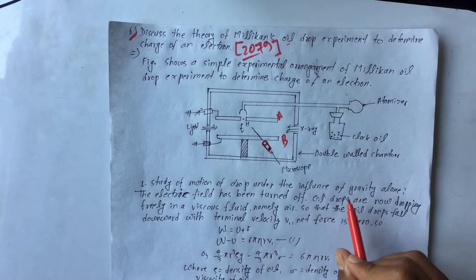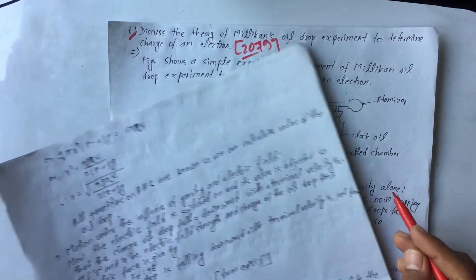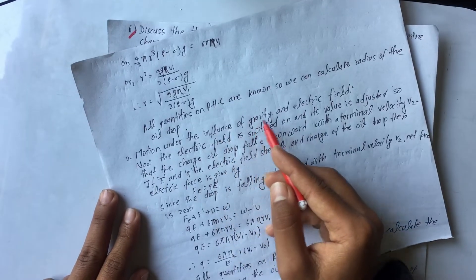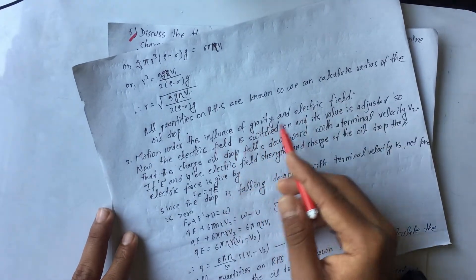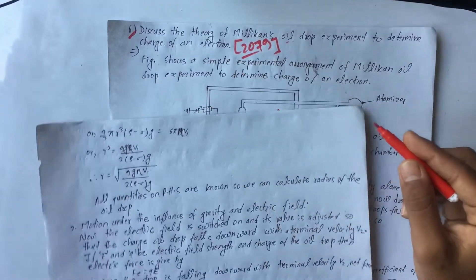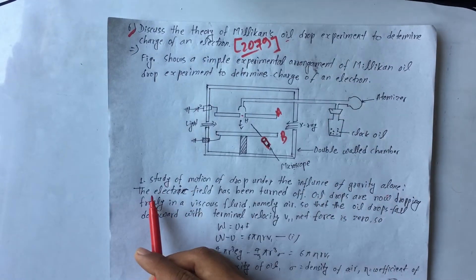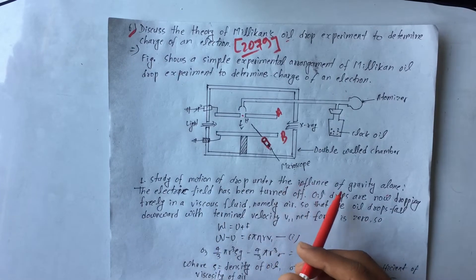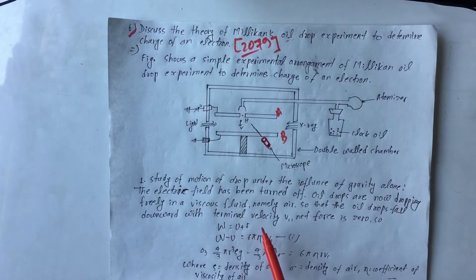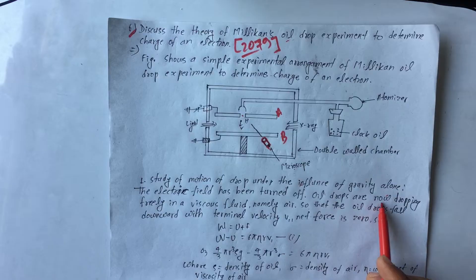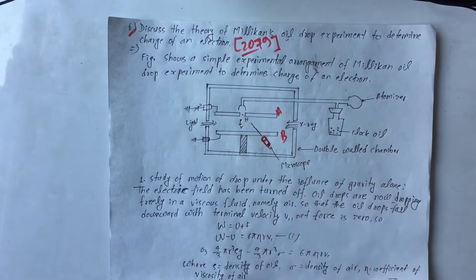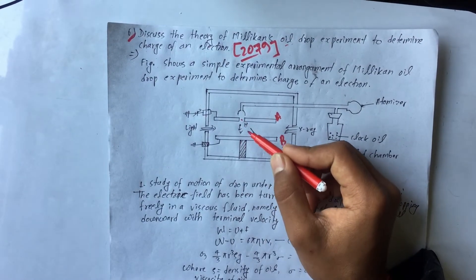Study of motion of drop under the influence of gravity alone. The electric field has been turned off. Oil drops are now dropping through a viscous fluid — the atomizer sprays oil drops and we observe their velocity.